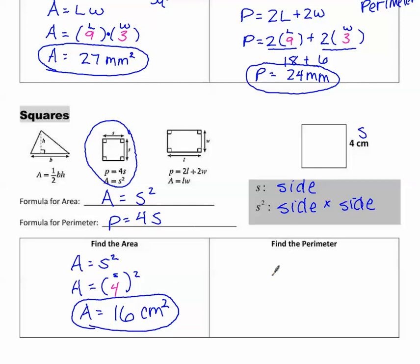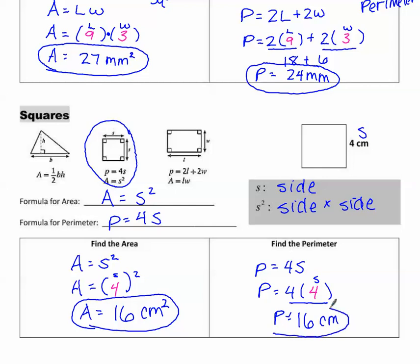To find the perimeter, write the formula P equals 4S with blanks. S is 4, so 4 times 4 equals 16. P equals 16 centimeters — and remember, perimeter is plain. In this case, area and perimeter both came out to 16, because there are 4 sides and each side is 4. It won't always work out that way.